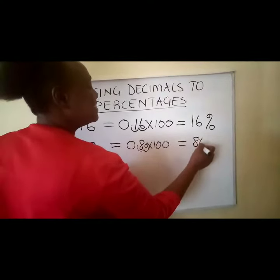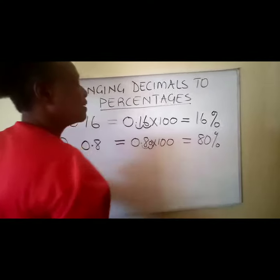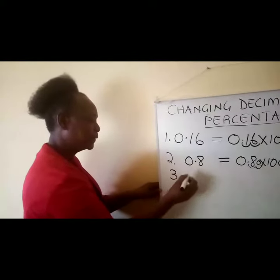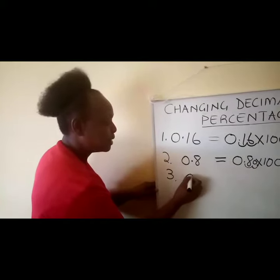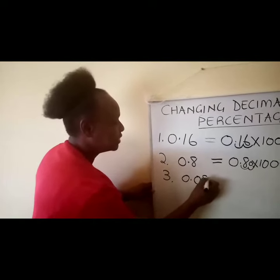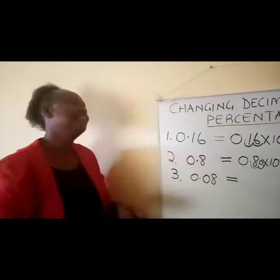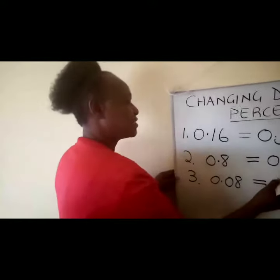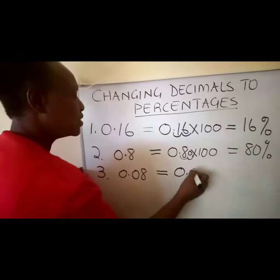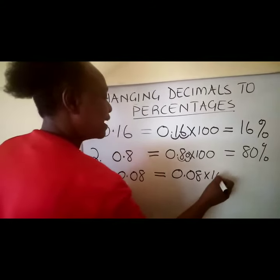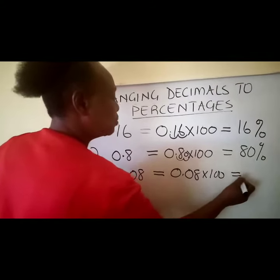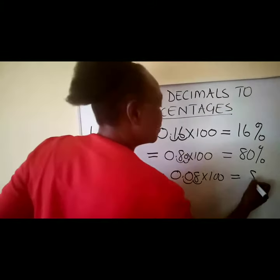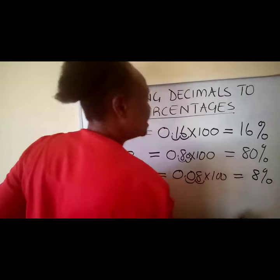Here's something very close to the previous example that some people want to know — to see the difference. Take 0.08: it's the same, 0.08 times 100. You move the comma two places — one, two — and this gives us 8 percent.